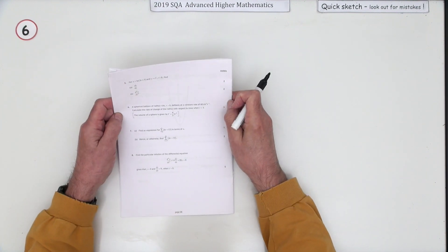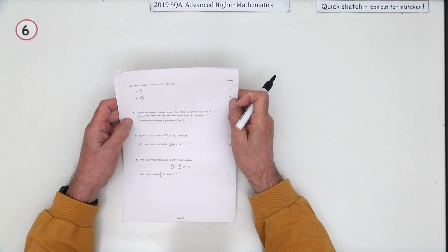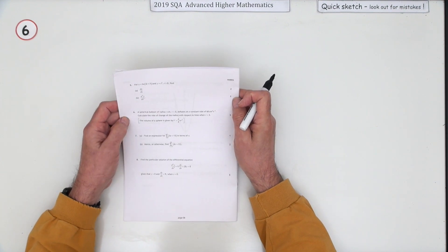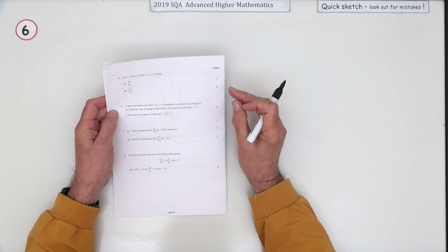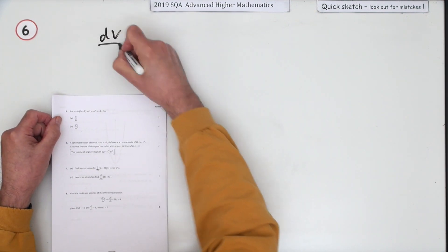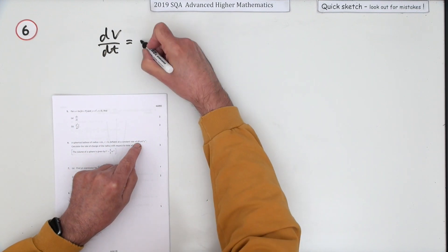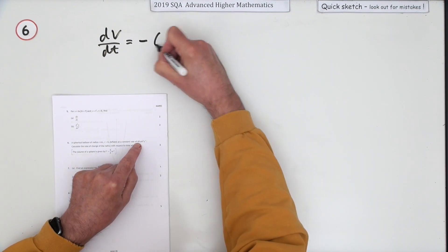Number six from the 2019 Advanced Higher Maths related rates of change. It's only a three mark question. A spherical balloon of radius r deflates at a constant rate. Let's put the information down. It's deflating, so the rate of change of the volume, it says it's deflating at 60, but it's deflating so that's negative.